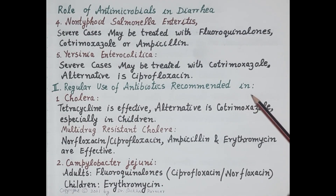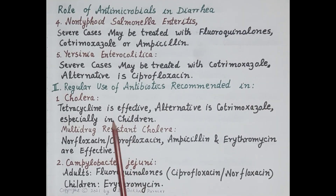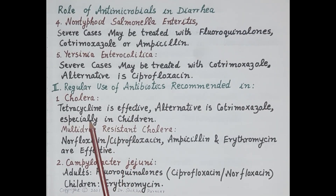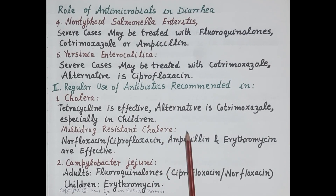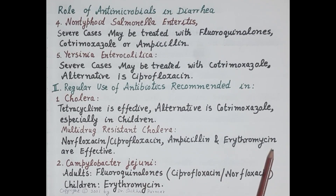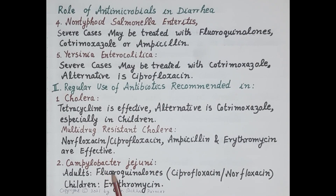The second category includes diarrheas where regular use of antibiotics is normally recommended. First is cholera — tetracycline is effective, with cotrimoxazole as an alternative especially in children. In multi-drug resistant cholera, it is treated with norfloxacin or ciprofloxacin. Ampicillin and erythromycin are also effective.